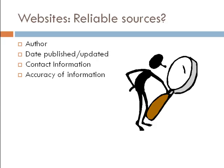Along with that, check the objectivity of the information. In other words, is the information presented clearly without any bias? If there is a bias, you might still use the website as long as you understand how they are presenting their information. You can also tell a lot about a website by looking at its references if it has them, or at the other web pages it links out to. If it links out to bad web pages, should you trust it?